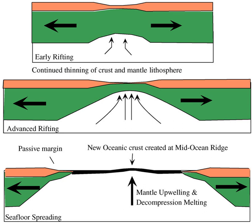Volcanic margins are usually distinguished from non-volcanic margins — such as the Iberian margin and Newfoundland margin — which do not contain large amounts of extrusive and/or intrusive rocks and may exhibit crustal features such as unroofed, serpentinized mantle. Volcanic margins differ from magma-poor margins in a number of ways, including a transitional crust composed of basaltic igneous rocks such as lava flows, sills, dikes, and gabbros.